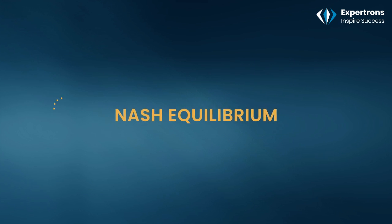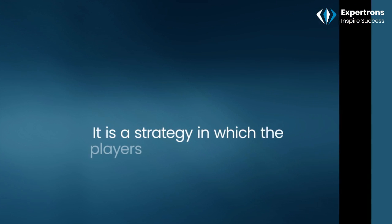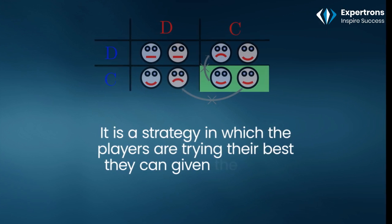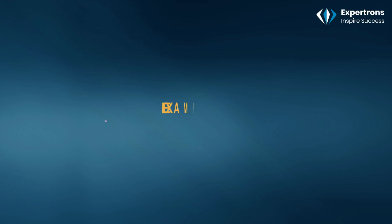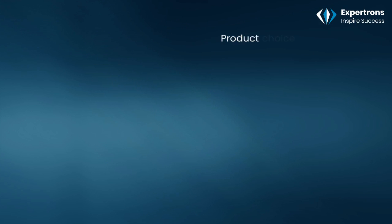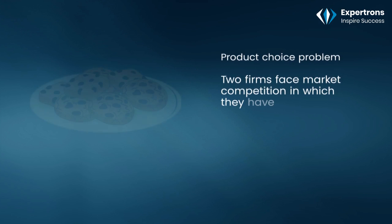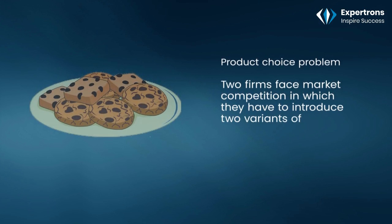Nash equilibrium is a strategy in which the players are doing the best they can given the actions of their opponents. Let's look at examples of Nash equilibrium. The first is the product choice problem: do firms face market competition in which they have to introduce two variants of biscuits?